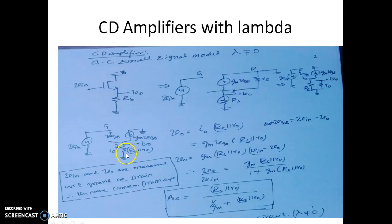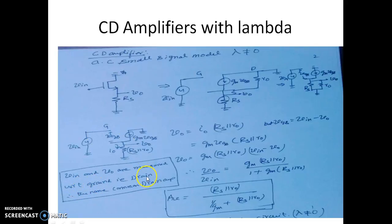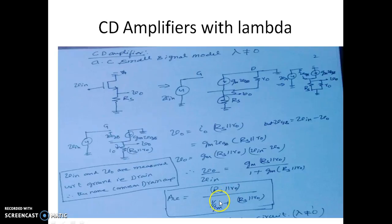In this circuit, VIN and V0 are both measured with respect to ground. The drain point is grounded, and since both input and output are measured with respect to that drain node, the circuit is called a common drain amplifier — that is why the name 'common drain' arises. The AV expression for the amplifier with lambda non-zero is: AV equals (RS parallel R0) divided by (1/GM plus RS parallel R0). When lambda becomes zero, R0 becomes infinity, and AV simplifies to RS divided by (1/GM plus RS).